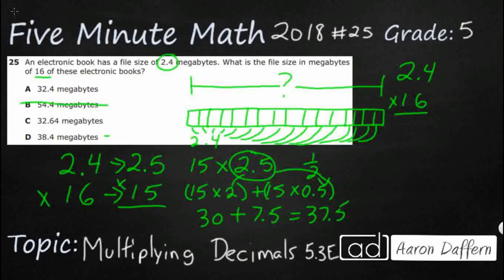What we do is we ignore this decimal. We just pretend it's 24 times 16. We'll bring that decimal back at the end. But just multiply like normal. 6 times 4 is 24. Carry the 2. 6 times 2 is 12. Add that 2 back in. There's your 144.